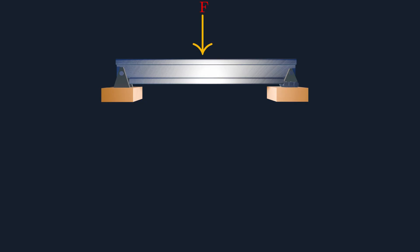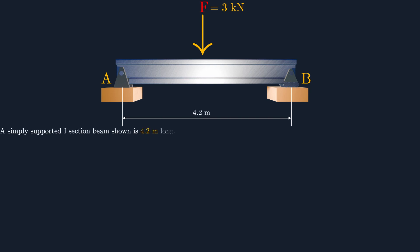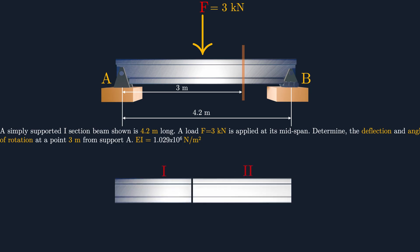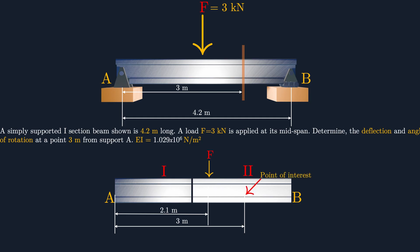Let's take a look at an example. We have a simply supported beam with a pin and a roller. The force is 3 kilonewtons and the length of the beam is 4.2 meters. The question: a simply supported I-section beam is 4.2 meters long, a load of 3 kilonewtons is applied at its mid-span; determine the deflection and the angle of rotation at a point 0.3 meters from support A. We're given that EI equals 1.029 × 10⁶ N·m². We're going to start by sectioning our beam — cutting before the force — giving us Section 1 and Section 2, with supports, the force, and our point of interest at 3 meters from support A.